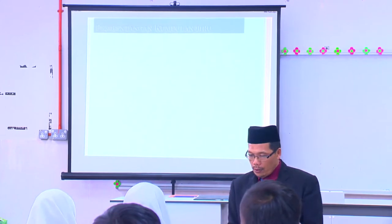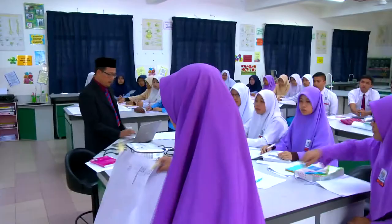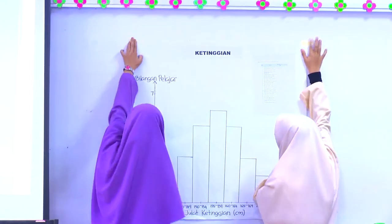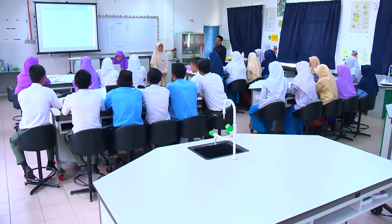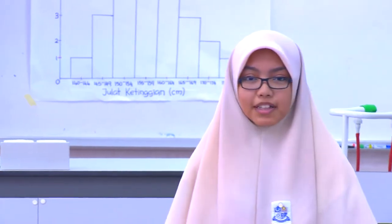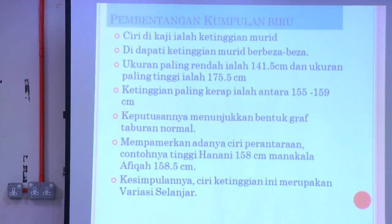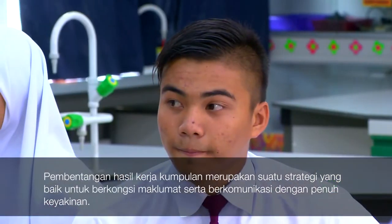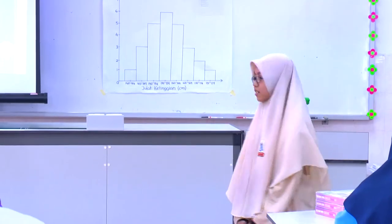Kumpulan Biru membentangkan hasil kerja mereka. Ketinggian murid adalah berbeza-beza antara satu sama lain. Ukuran yang paling rendah ialah 141.1 cm, manakala ukuran paling tinggi ialah 175.5 cm. Ketinggian paling kerap ialah antara 155 hingga 159 cm. Keputusan menunjukkan bentuk graf adalah taburan normal.